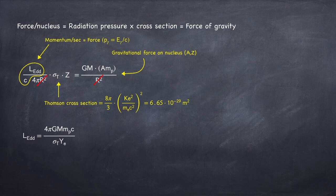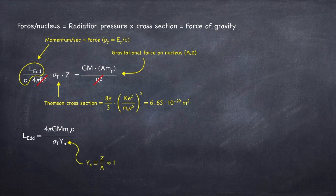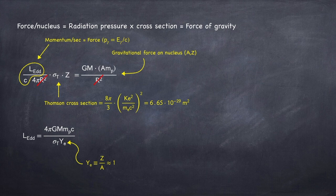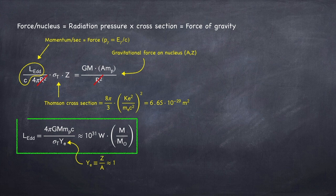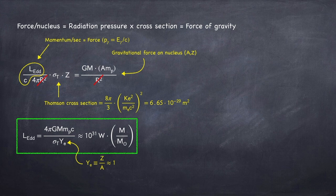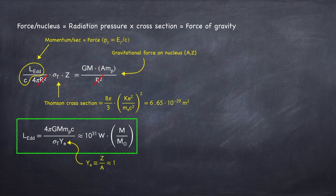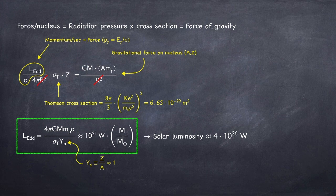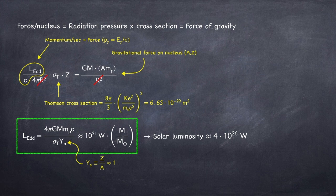Now here I've rewritten A over Z as Ye. Typically, in a star, it's very close to 1. If the star were entirely made up of hydrogen, then it would be exactly 1. Plugging in all the numbers, we get that the Eddington luminosity is about 10 to the 31 watts times the mass of the star in units of solar masses. For reference, the luminosity of the sun is about 4 times 10 to the 26 watts. Clearly we can see that the sun is not a radiation dominated star, as its Eddington luminosity is 10 to 100,000 times brighter than its actual luminosity.